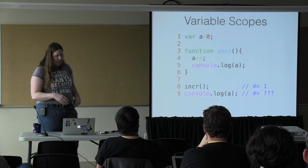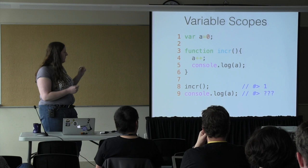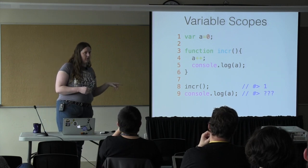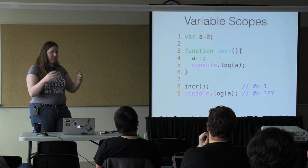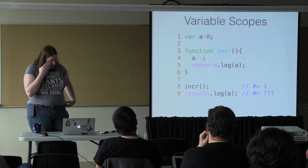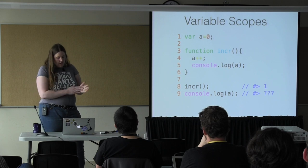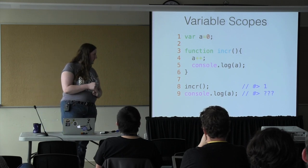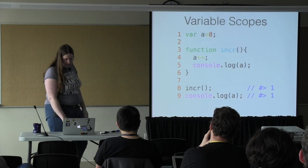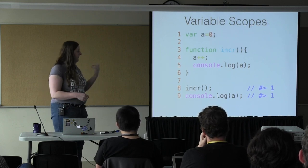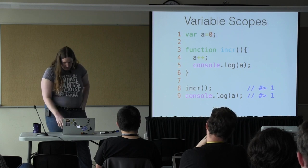Another thing to talk about is variable scopes. Here we're globally defining `a` and not passing it in, but modifying it as though it's a closure. A closure is a function that has a reference to a variable not defined within its own scope. A function that modifies and uses only variables defined within its own scope is known as a pure function. In this particular case, increment is a closure that is actually incrementing the value of `a` directly.